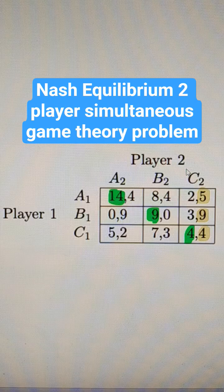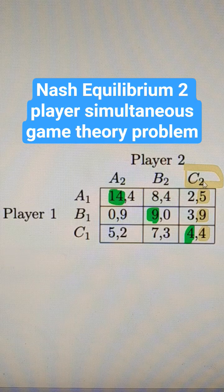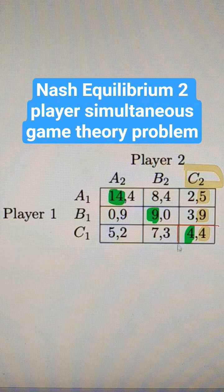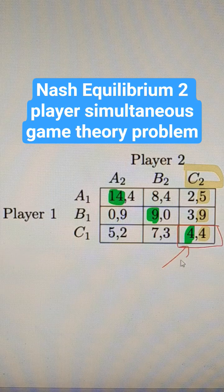Okay, it looks like player 2 actually has a dominant strategy. That's C2. Our Nash equilibrium would be where they both get 4. They're both going to play C2.